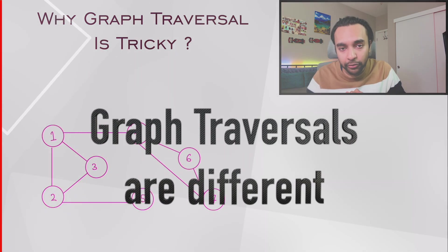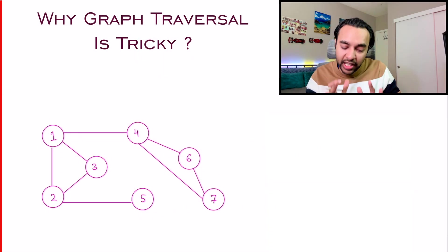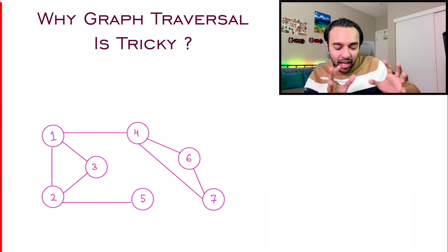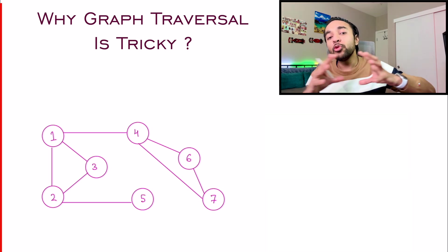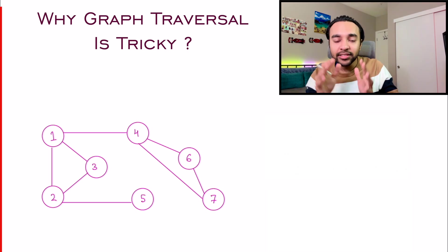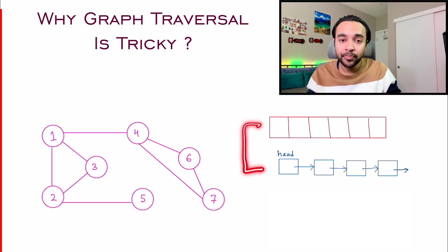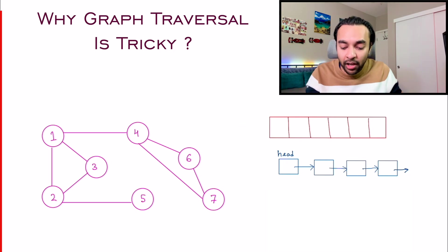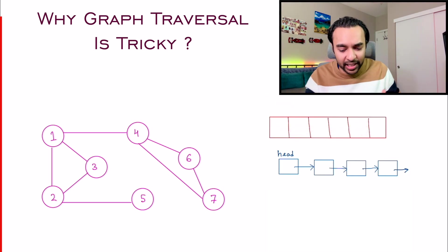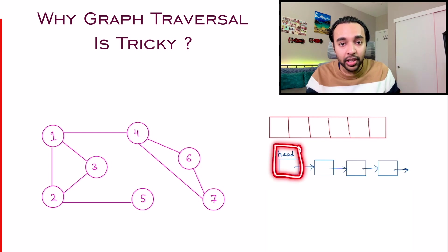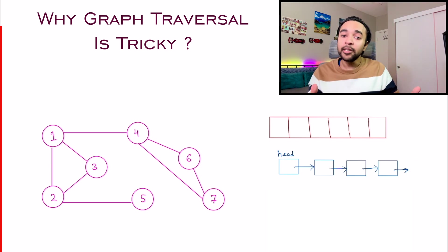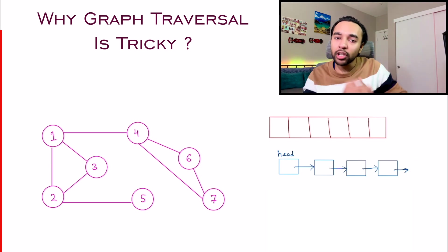Let us say you have this graph in front of you and you need to traverse it. In general, traversal means a certain technique by which you can cover all of the values that are present in your data structure. If you remember, when you had linear data structures like arrays and linked lists, traversal was very easy. In an array you could start from the zeroth index and then traverse all your elements. In a linked list you have a head pointer and using next values you can cover your entire list until you reach a null value. You are always sure that you have covered all the values.